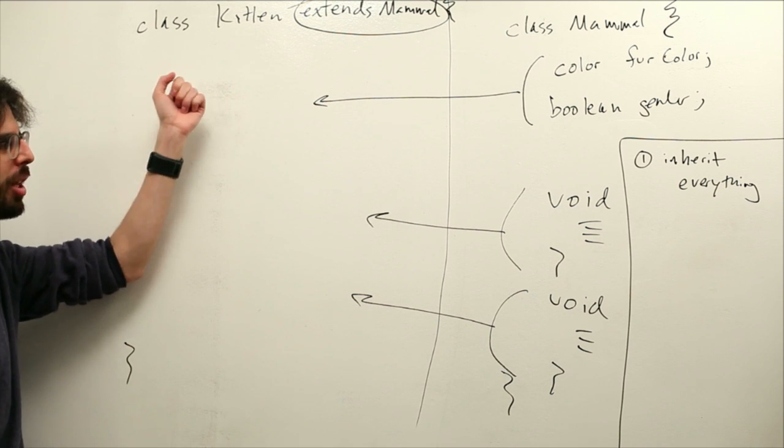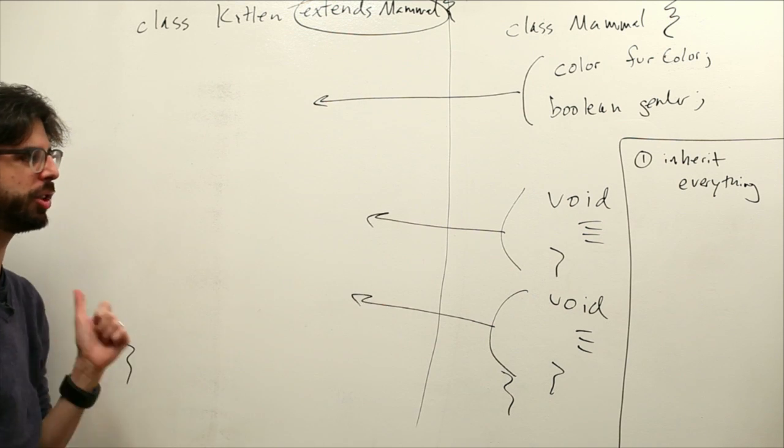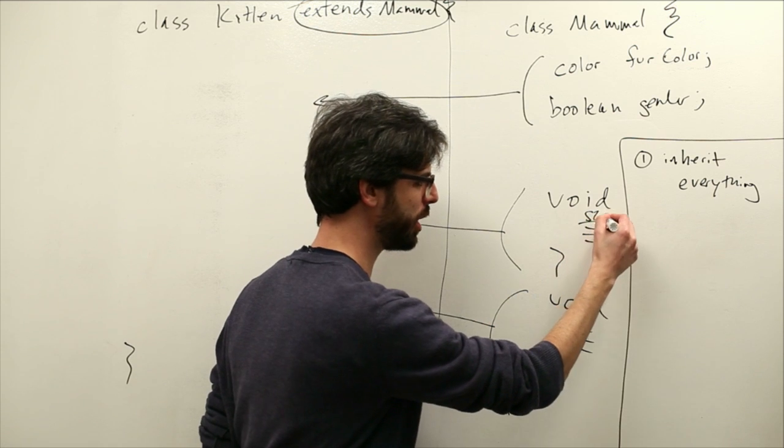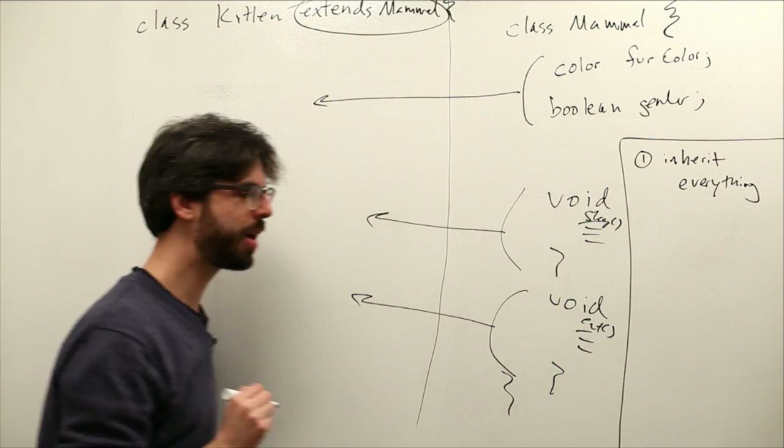And I'm going to make a list of the things that you can do with inheritance. So number one is you inherit everything. So now we see that. So a kitten has fur color, gender, it has a function called sleep, it has a function called eat. Sleep and eat.